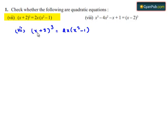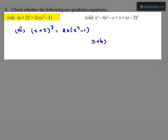On the left hand side, we have x plus 2 whole cube. We know that a plus b whole cube is equal to a cube plus b cube plus 3a square b plus 3ab square. By using this formula, let us expand x plus 2 whole cube.